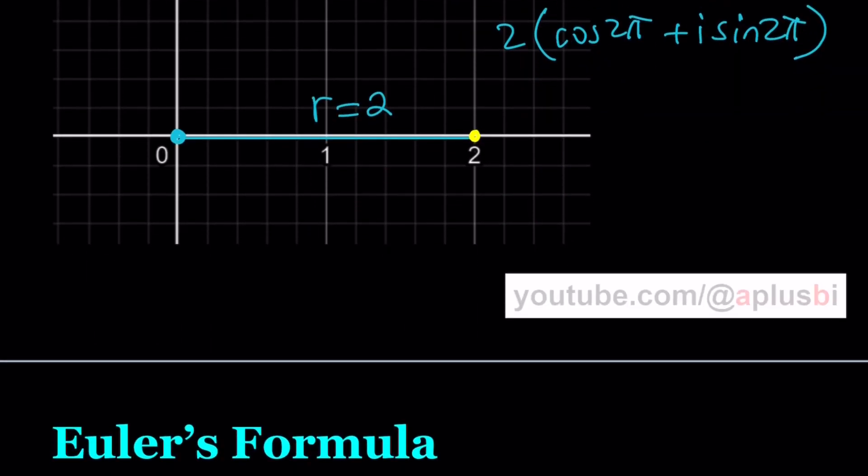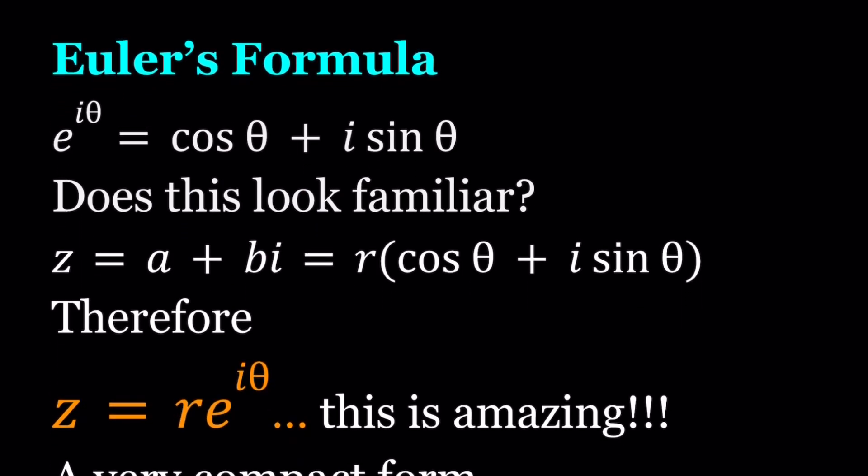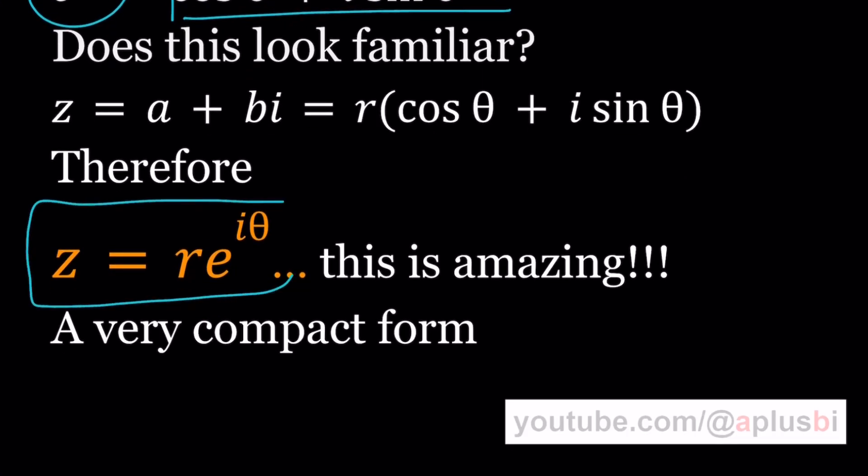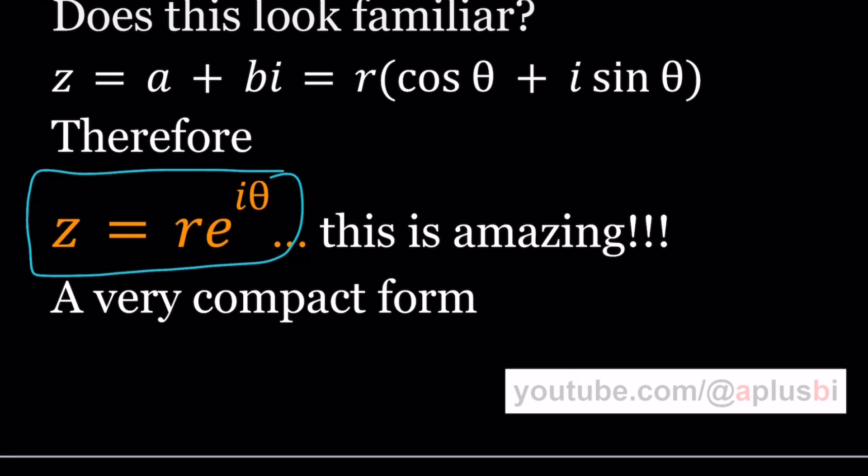So here comes Euler's formula, which is going to be very, very helpful because you don't want to write this lengthy expression every time like cosine theta plus i sine theta. And thanks to Euler, this is just amazing, mind-blowing. This relationship, if you look at the Taylor series expansion of cosine and sine and then evaluate this, you're going to notice that it's equivalent to E to the power i theta, which is amazing. So we are able to write this as E to the power something, which is nice because this is the exponential function. And this should look familiar because when we wrote our complex number, we wrote A plus Bi as R times this. So now our complex number can basically be written as R times E to the power i theta, which is great. Very compact form and very economical.